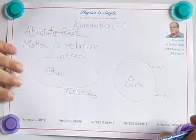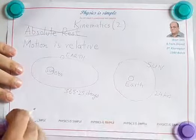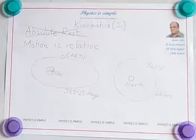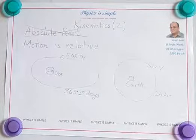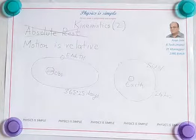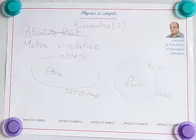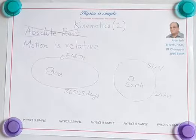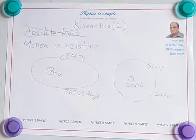And therefore, with respect to an observer on the Earth, the Sun is going around the Earth. Both statements are correct because motion is relative.